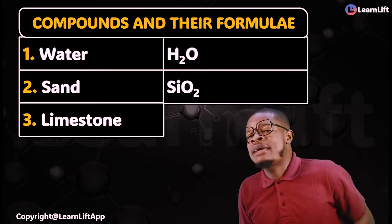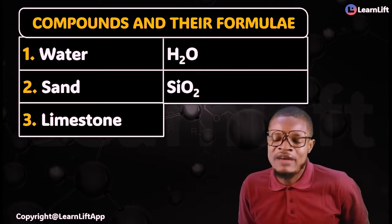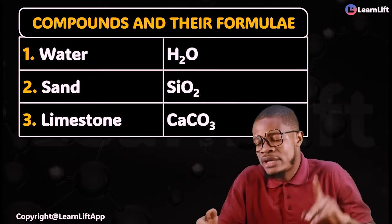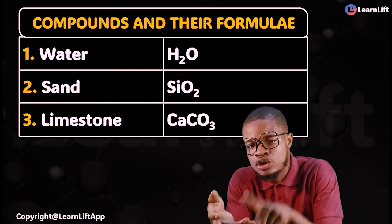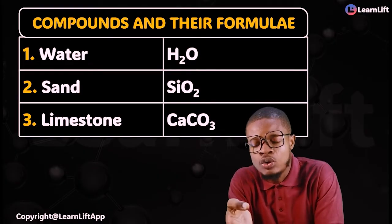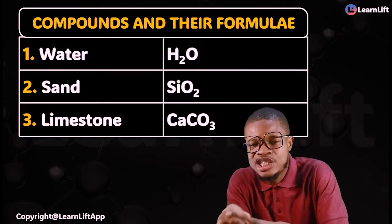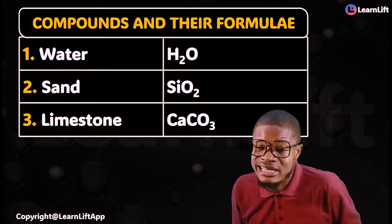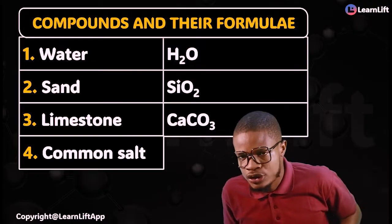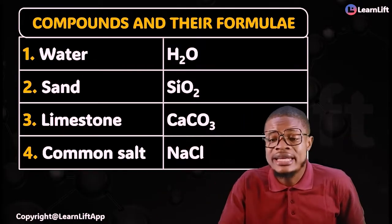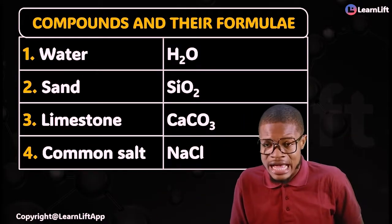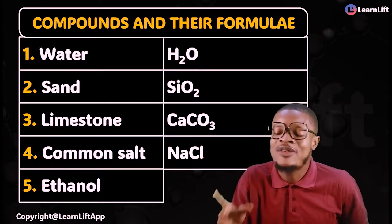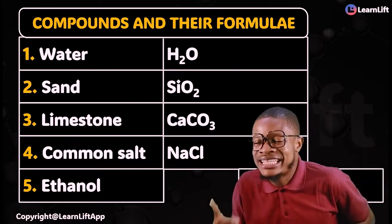Number 3 is limestone. Whether you call it limestone, chalk, marble, aragonite, or eggshell — all of them have the same formula: CaCO₃. Number 4 is common salt. Your normal common salt is NaCl — sodium chloride. Number 5 is ethanol. The formula for ethanol is C₂H₅OH.